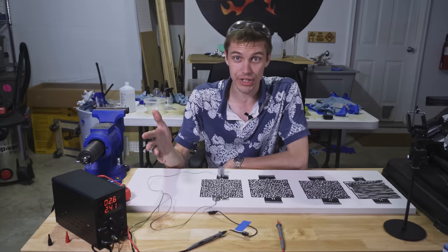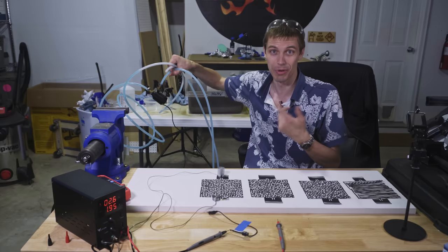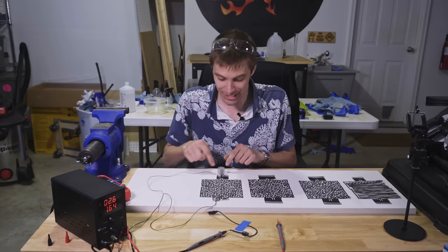Electric potential or voltage, which is the other thing that is read out on this power supply, is equivalent to the height of the water at any given point in the maze. When I turn on this power supply, it's serving the exact same purpose as this water pump that was propelling water through the maze. It's doing two things. It's pulling electrons out of the bottom of the maze, and it's injecting electrons into the top of the maze.